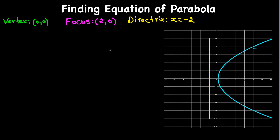We are going to find the equation of a parabola whose vertex is (0, 0), which means it is at the origin, and focus is (2, 0), and directrix is x = -2. These three values are given to us, so we need to find the equation of the parabola.